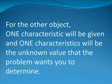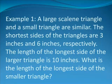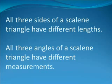Example number one: a large scalene triangle and a small triangle are similar. The shortest sides of the triangles are three inches and six inches, respectively. The length of the longest side of the larger triangle is 10 inches. What is the length of the longest side of the smaller triangle? You should remember that scalene triangles are triangles that, in general, have three sides, each having three different lengths, and also three internal angles, each having three different measurements. That information is not essential to solving this problem, but it will help you in the long run to know what the definition of a scalene triangle is.